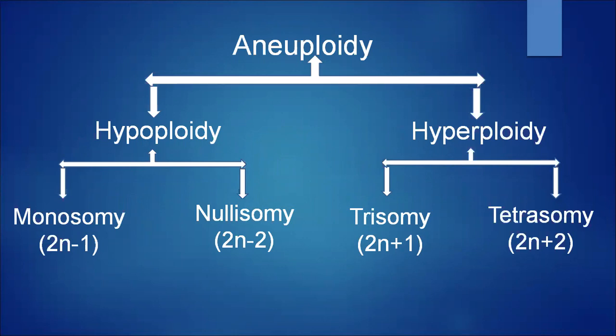Hypoploidy is again divided into two: monosomy, that is 2n−1, and nullizomy, that is 2n−2. Hyperploidy is divided into two: trisomy, that is 2n+1, and tetrasomy, that is 2n+2.